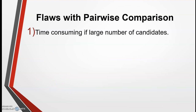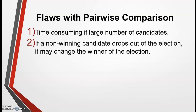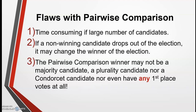Just like all methods, the pairwise comparison has some flaws. One is that it is time consuming with a large number of candidates. Two is that if a non-winning candidate drops out, it may change the winner of the election — as we saw with Beth and Eileen dropping out and making Dawn the winner. Also, the pairwise comparison winner may not be a majority candidate, a plurality candidate, nor a Condorcet candidate. In fact, they don't even need any first place votes and can still win more comparisons than anybody else.